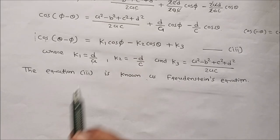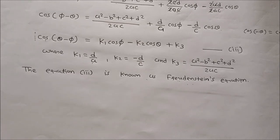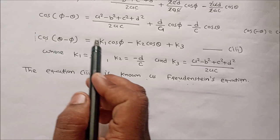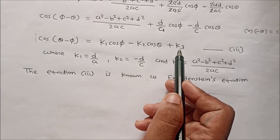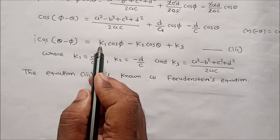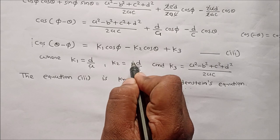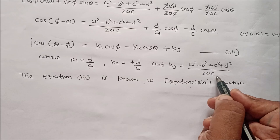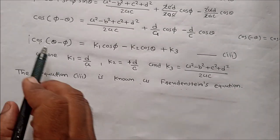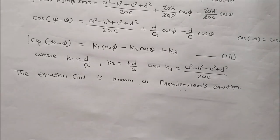Either the value of a or d can be assumed to get proportionate values of other parameters. The Freudenstein equation is: cos(theta − phi) = K1 cos phi − K2 cos theta + K3, where K1 = d/a, K2 = d/c, and K3 = (a² − b² + c² + d²)/(2ac). This equation is known as the Freudenstein equation.